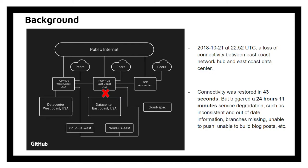During that time, users saw inconsistent and out-of-date information, branches were missing, and they were unable to push or build blog posts, etc.